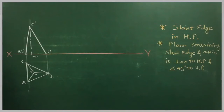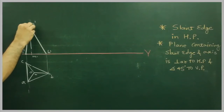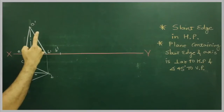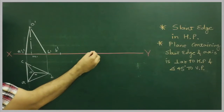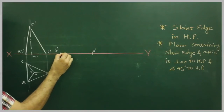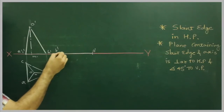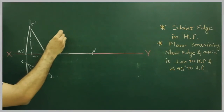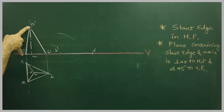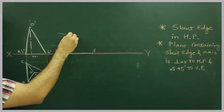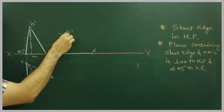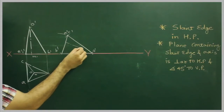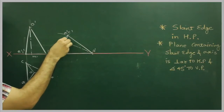After this, it is resting on one of its slant edges, so this is the slant edge B dash, O dash. Take B dash to A dash, C dash. Cut from here. Same way, take O dash to A dash, C dash. This is M dash.